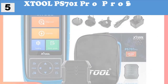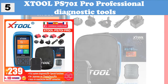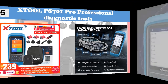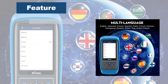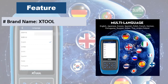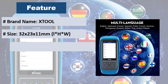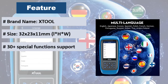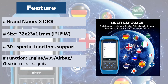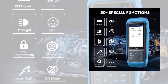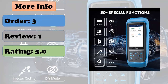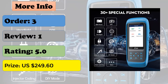At number 5: XTOOL PS701 Pro Professional Diagnostic Tools. Full systems diagnostic with active test. 30 plus special functions support like ABS, DPF, SAS, IMMO, etc. Bluetooth connection with VIN identification. Free online updates. Performs reset for the engine oil life system, which calculates an optimal oil change interval depending on driving conditions and climate, and turns off the warning light. Also features throttle relearn, tire pressure reset, and steering angle sensor adjustment.